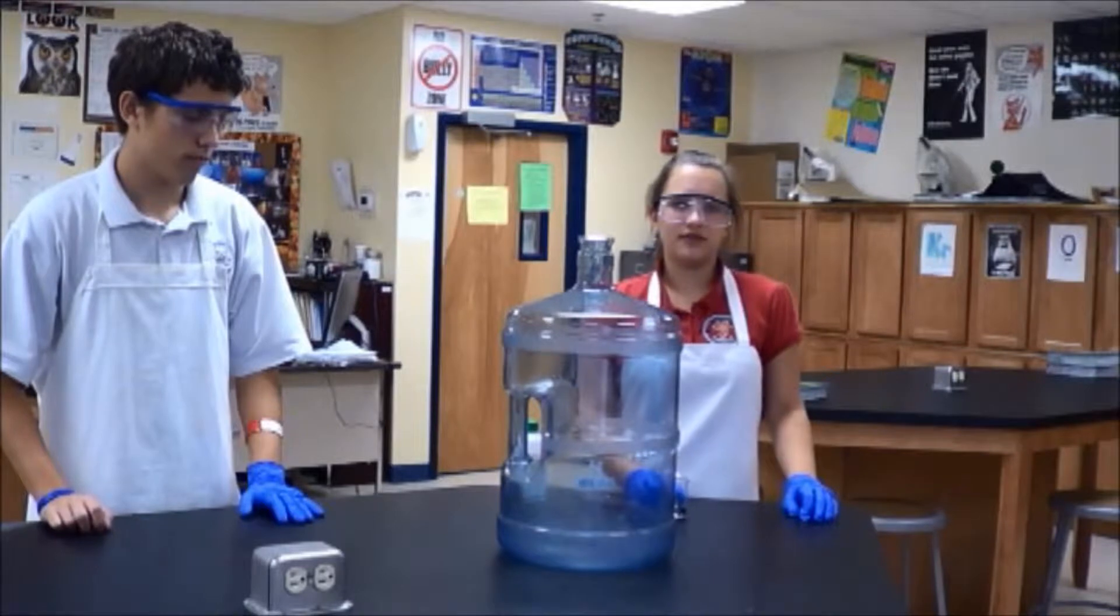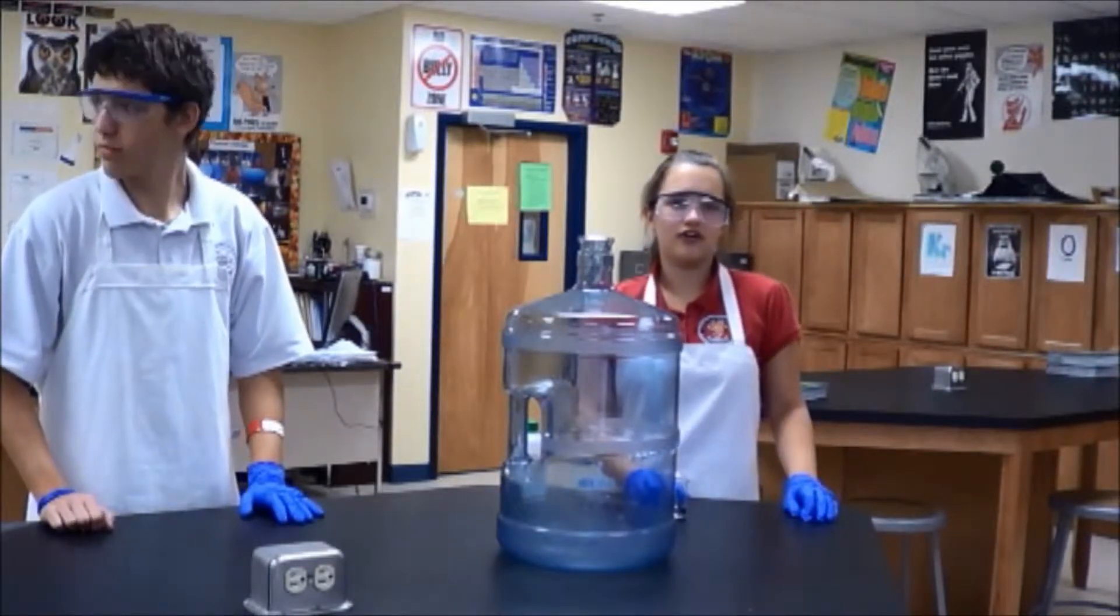Next, we're going to add another 25 milliliters of isopropyl alcohol and swirl it again.